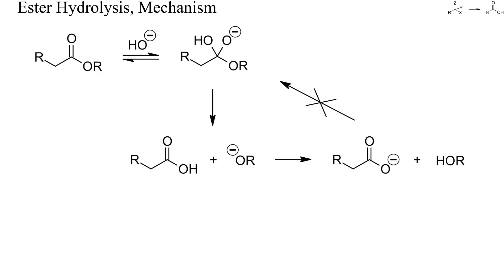Carboxylic esters can be hydrolyzed both under alkaline or acidic conditions. In a typical alkaline saponification, a carboxylate salt and the alcohol are formed, which do not react with each other. Thus, alkaline saponifications are irreversible. Such saponifications are particularly easy if the alcohol is strongly acidic and sterically undemanding, and if the acid is electron-deficient and thus strongly acidic.